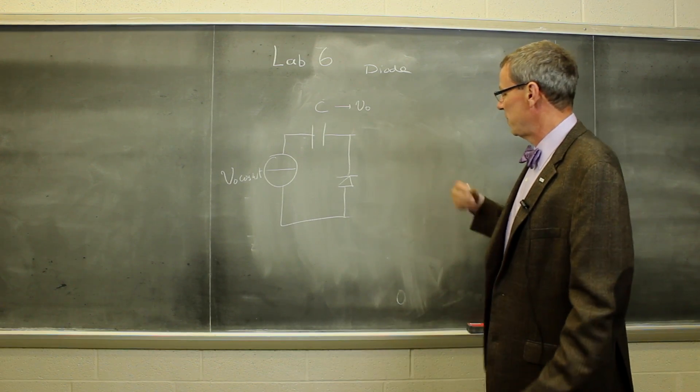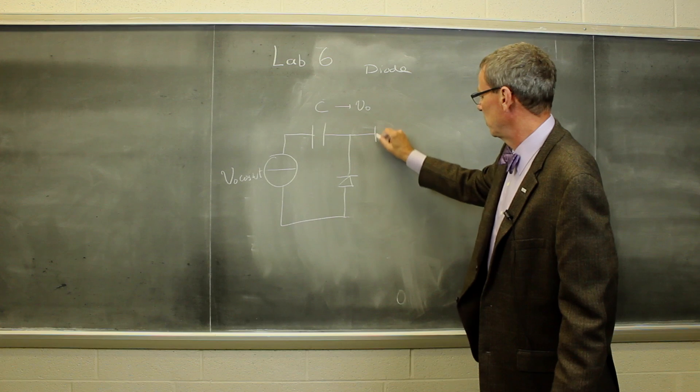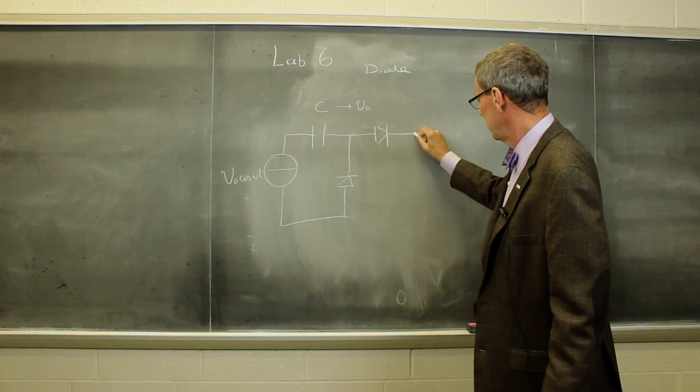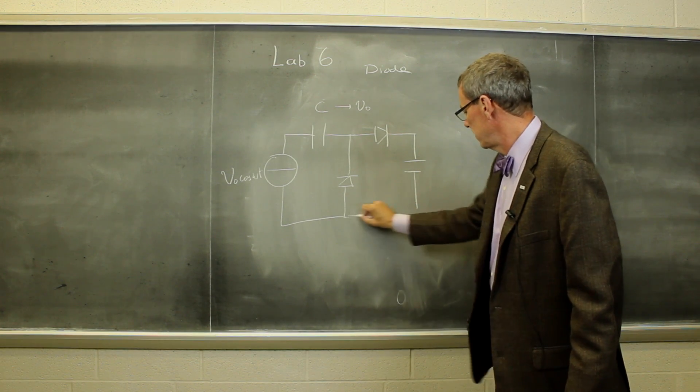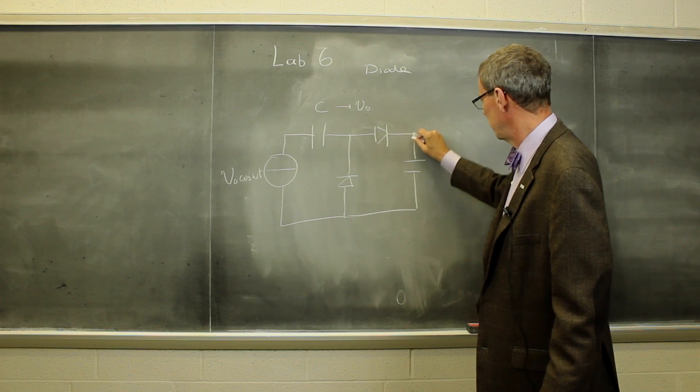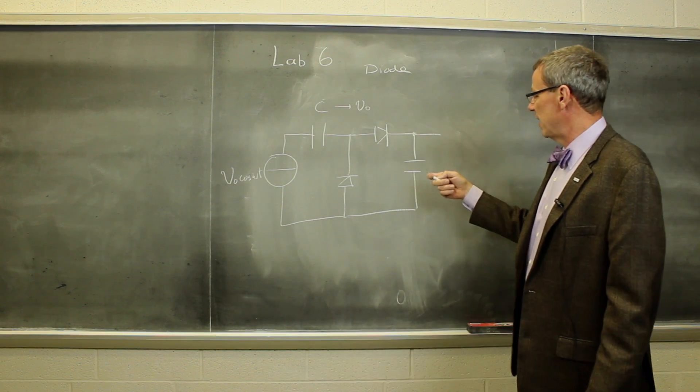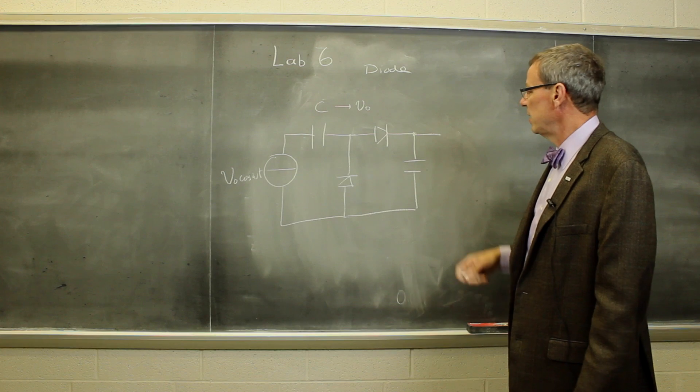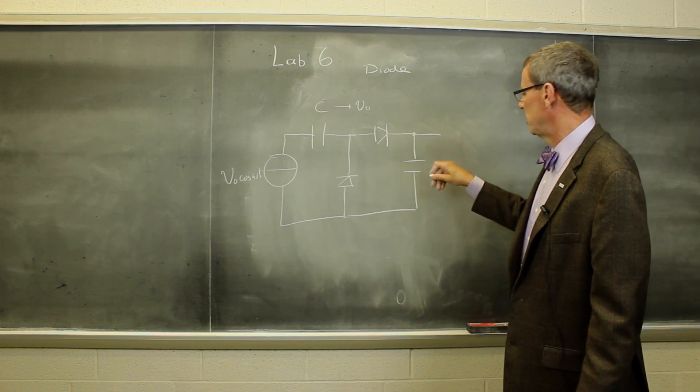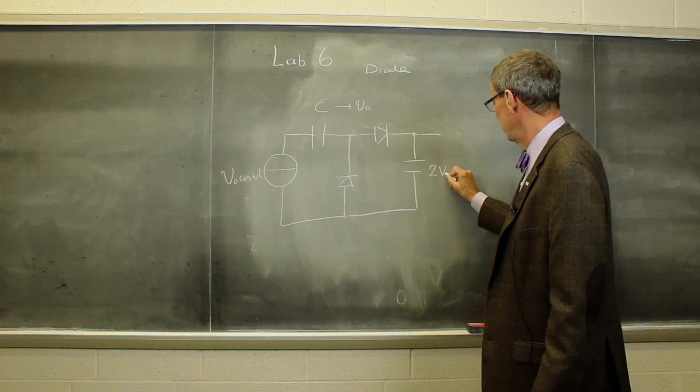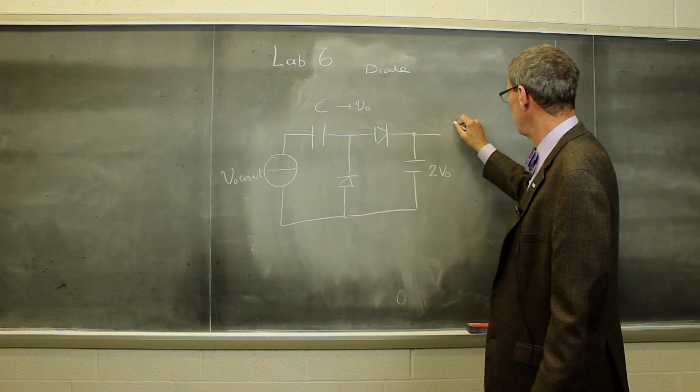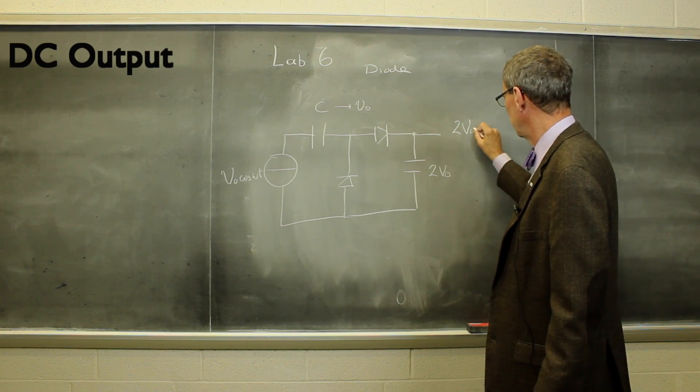We're actually not going to stop here. We're going to add a second stage to this circuit. We're going to add a second diode, put a capacitor here, hook this up and look at the output voltage here. With the second capacitor and the diode, this capacitor is going to charge up to 2V0, and we're going to get an output which is going to be a DC level of 2V0.